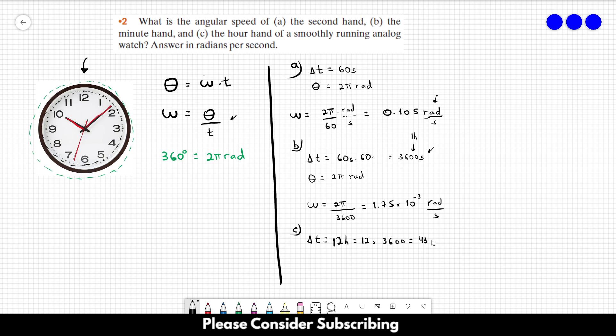This equals 43,200 seconds. That's the amount of seconds you have in 12 hours. Most of my students use 24 hours, so there is a mistake there. The angular speed will be equal to 2π—we're using a full circle again—divided by 43,200. This equals 1.45 times 10 to the minus 4 radians per second. That's the answer for letter c.